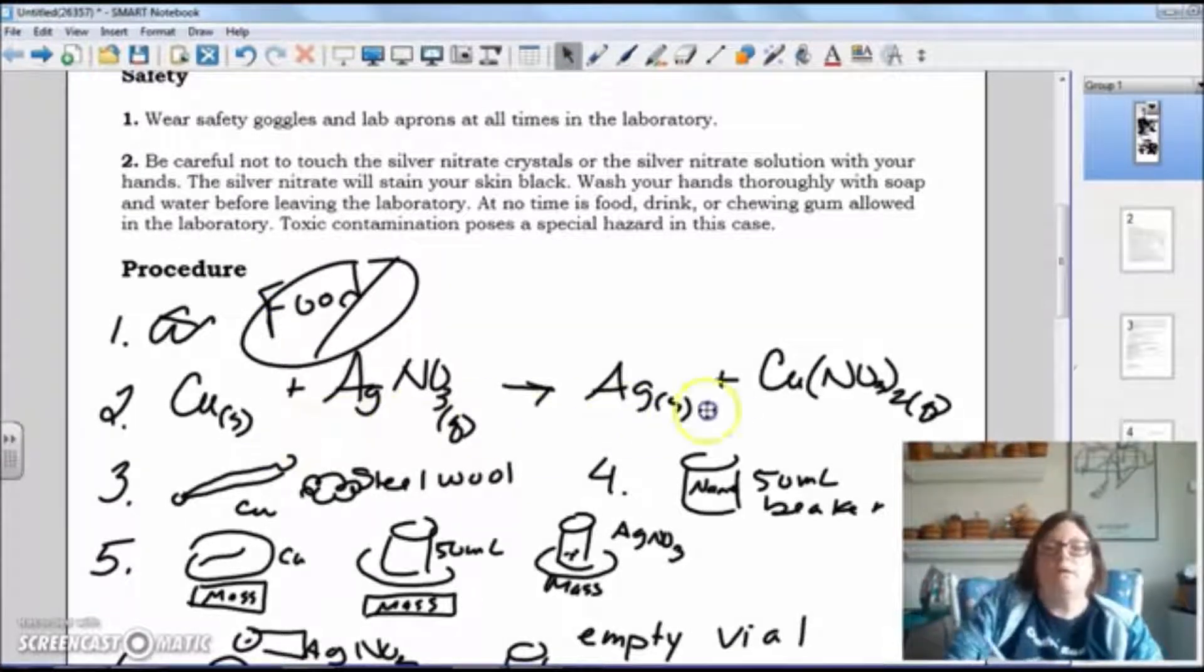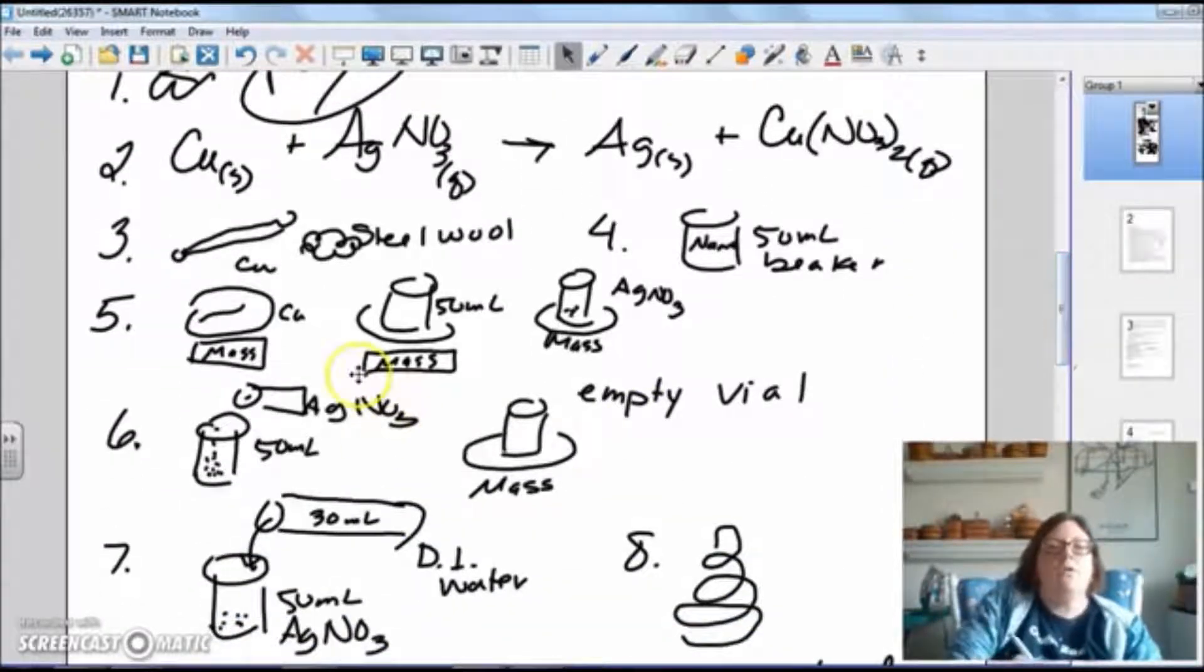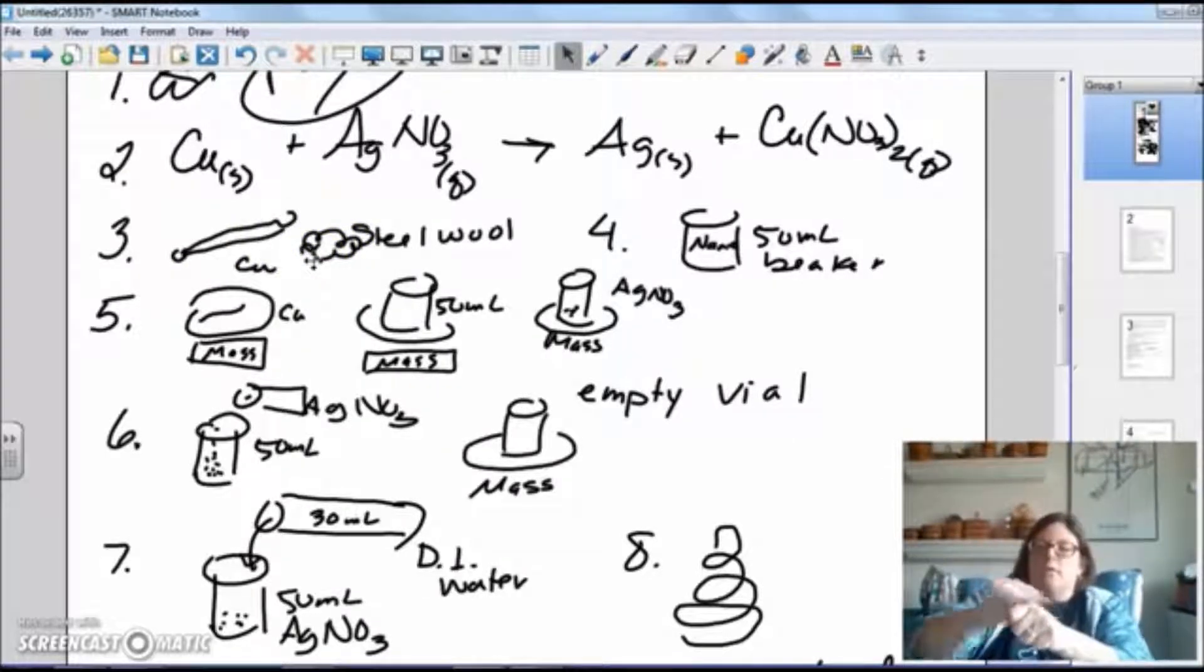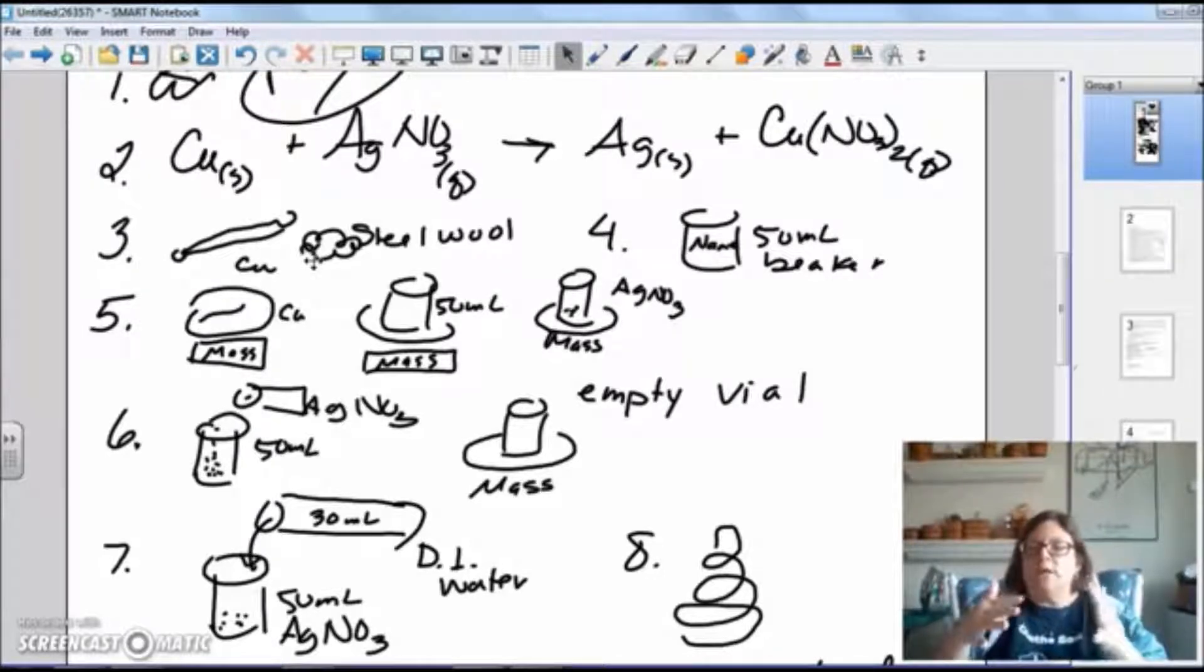Step two, you need to write out your equation. I'd like you to write it out large so it fills the paper. Copper plus silver nitrate aqueous leads to silver solid plus copper two nitrate aqueous. Step three, you're going to get a piece of copper wire. You're going to get a piece of steel wool. You'll use the steel wool and rub it across the wire so that you're basically removing any copper oxide from the outside of the wire and it'll help it to react more easily.